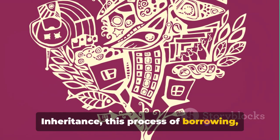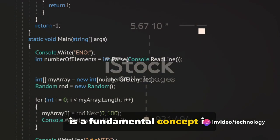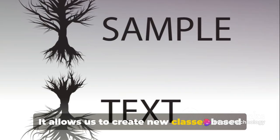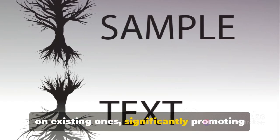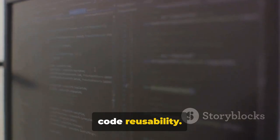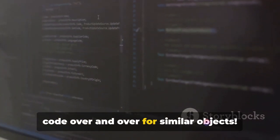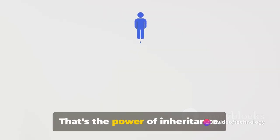Inheritance, this process of borrowing, is a fundamental concept in object-oriented programming. It allows us to create new classes based on existing ones, significantly promoting code reusability. Imagine not having to rewrite the same code over and over for similar objects. That's the power of inheritance.